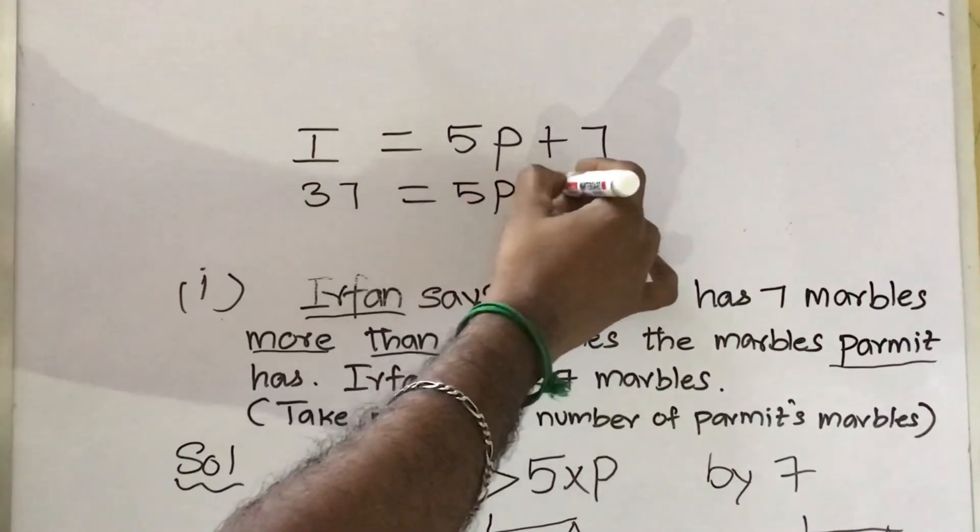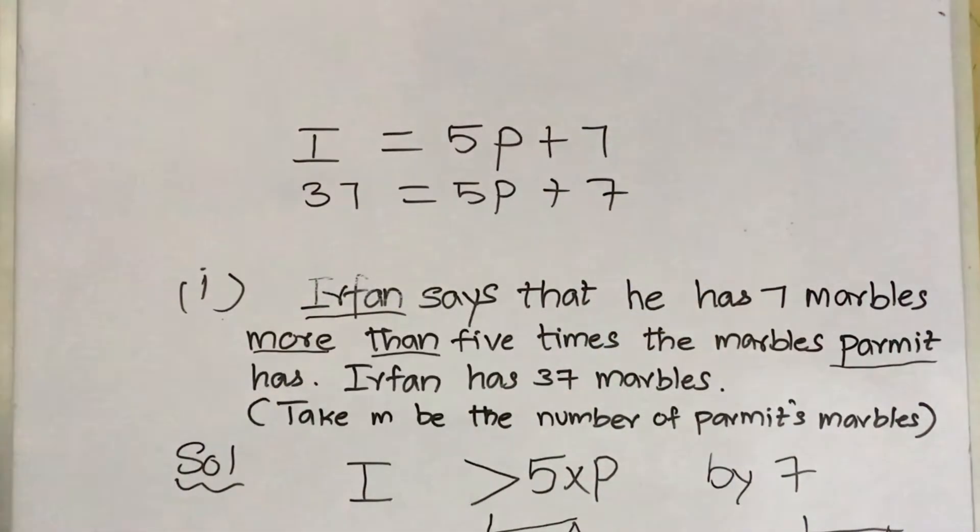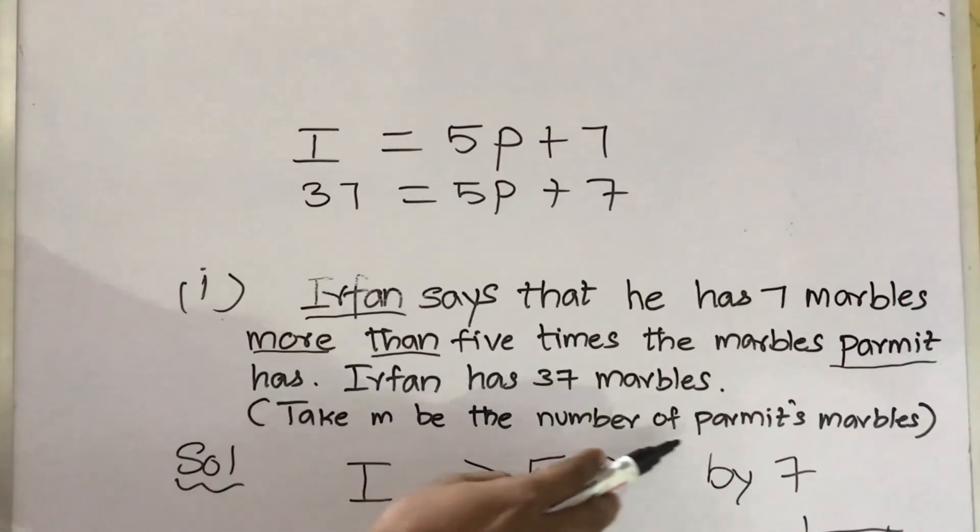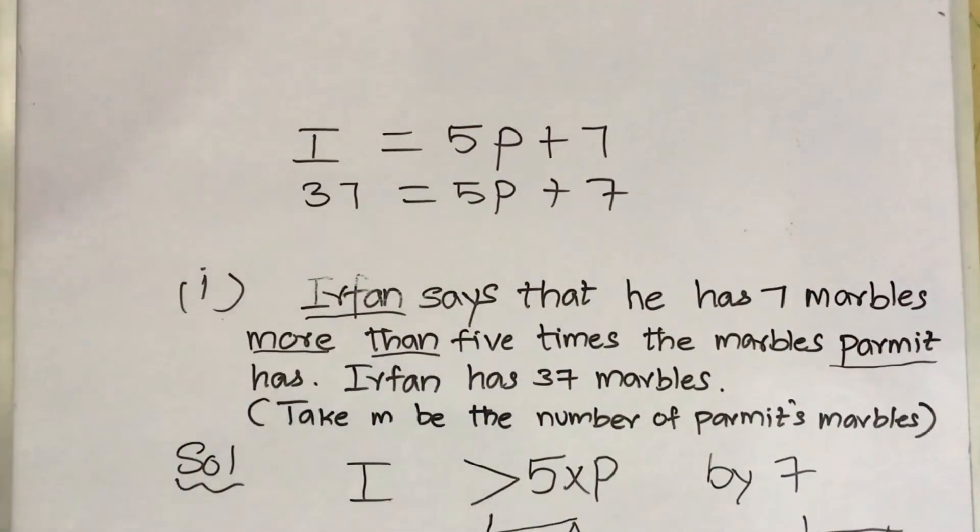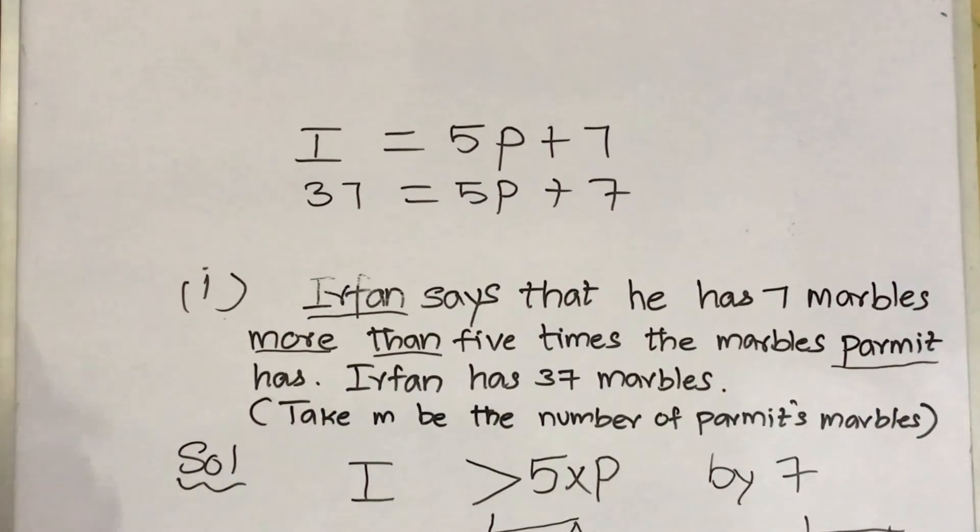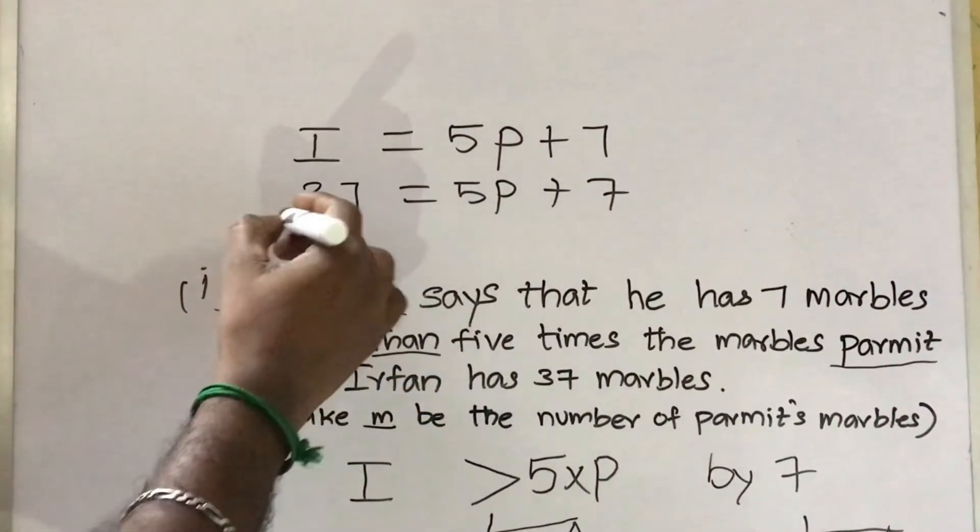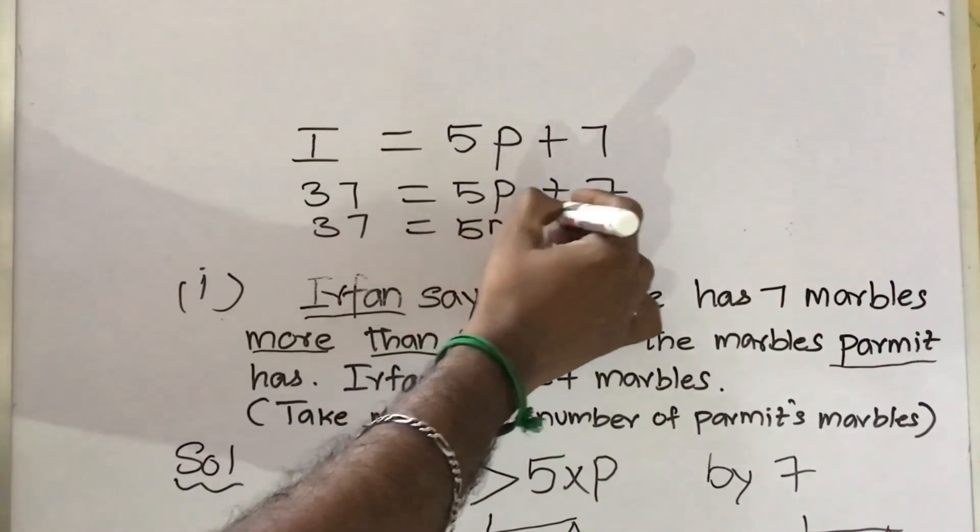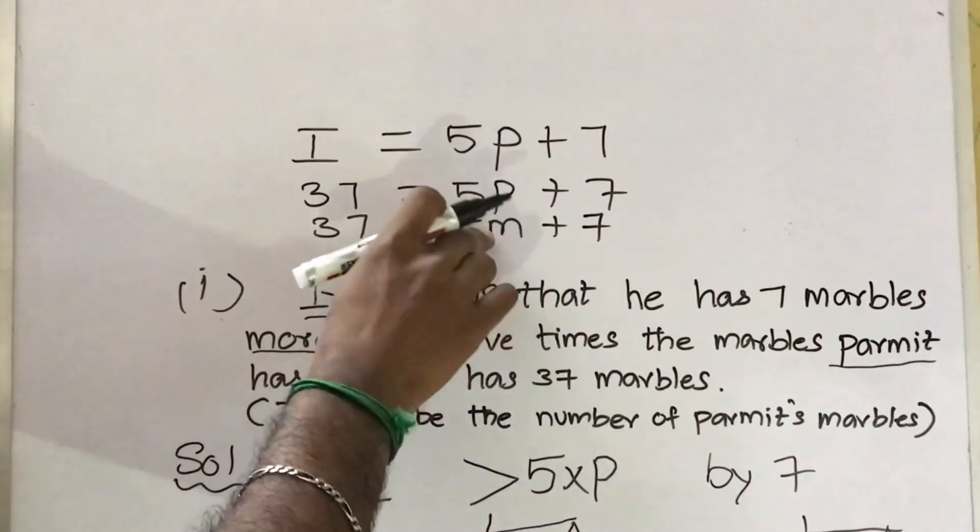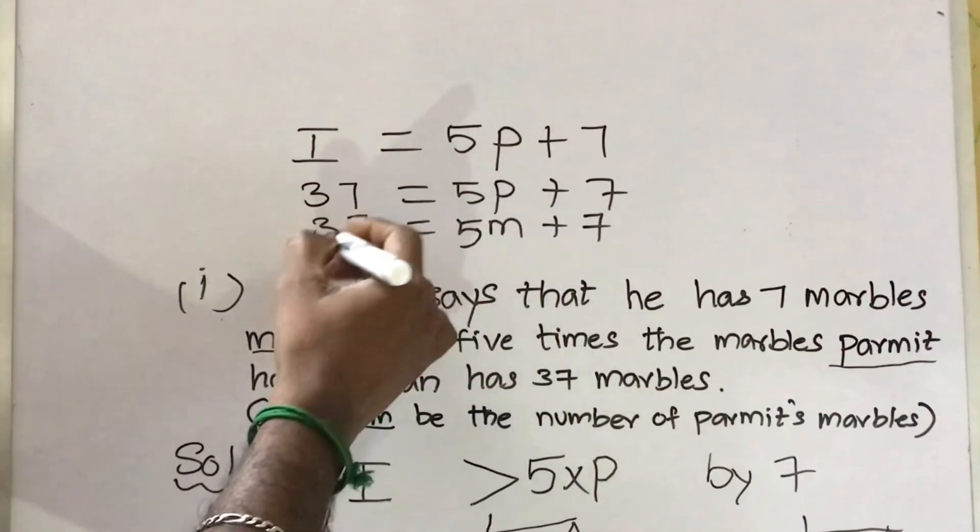One more given: take M to be the number of Parmit's marbles. Parmit is P. Already I took P. Now the given is we have to take M, so let us change this also to 5M + 7. So this is our final answer.